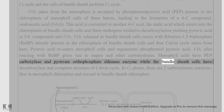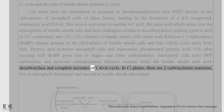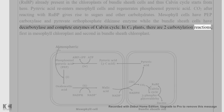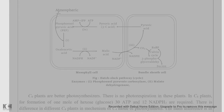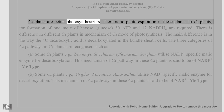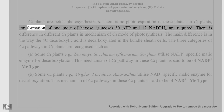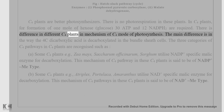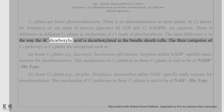Pyruvic acid re-enters mesophyll cells and regenerates phosphoenolpyruvate. CO2, after reacting with RuBP, gives rise to sugars and other carbohydrates. Mesophyll cells have PEP carboxylase and pyruvate orthophosphate dikinase enzyme, while bundle sheath cells have decarboxylase and complete enzymes of the Calvin cycle. In C4 plants there are two carboxylation reactions: first in mesophyll chloroplasts and second in bundle sheath chloroplasts. C4 plants are better photosynthesizers; there is no photorespiration in these plants.